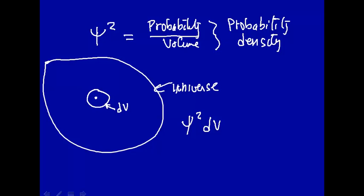So psi squared is the probability density. And psi itself, the wave function itself, could be a complex number and has no really well-defined meaning. But if you square it, it's a probability density.